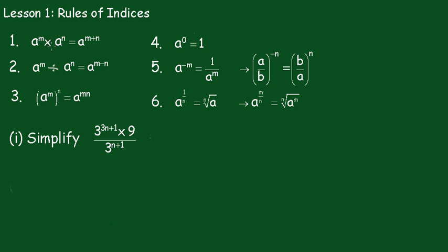We have that a to the m times a to the n equals a to the m plus n. We add the indices. Number 2: we have a to the m divided by a to the n equals a to the m minus n. We subtract the indices.